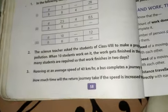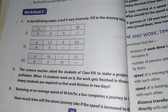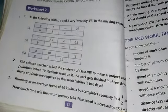Now, let us take one more question. Let us take question number three. Running at an average speed of 40 km per hour, a bus completes a journey in four and half hours.